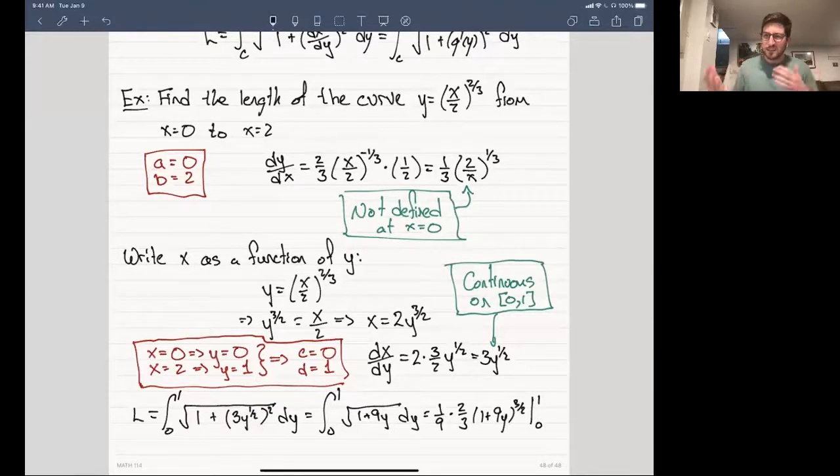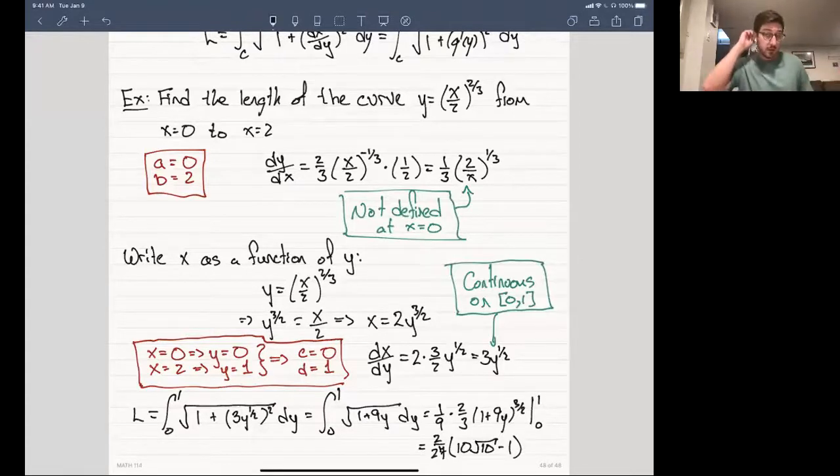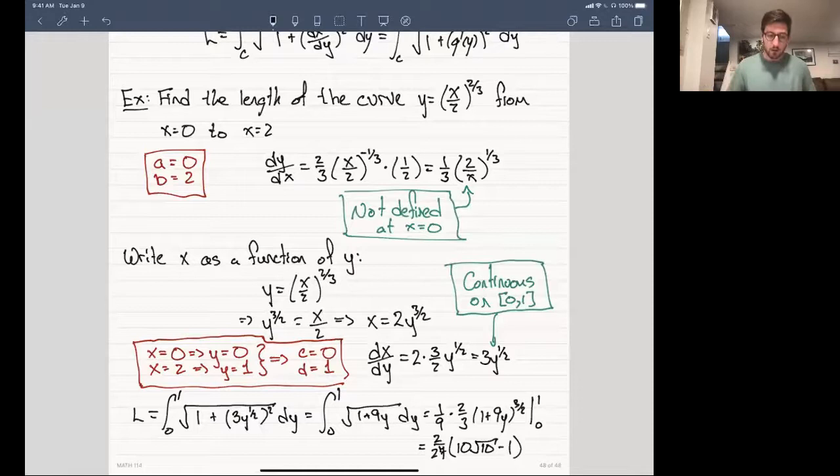And you can clean this thing up a little bit. The numbers, you know, they aren't as pretty as maybe you would like them to be. But this gives you (2/27)(10√10 - 1). Woohoo, right? It's a number. It's pretty ugly. If you really care what the decimal is, it's like 2.27 if you throw it into your calculator. But nonetheless, this gives us a new way or an alternative method to actually finding the arc length of curves when all of maybe the prescriptions for our formula are not met.